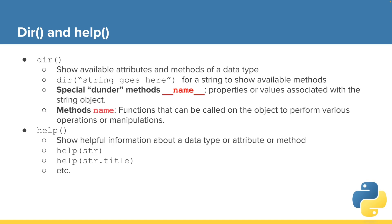One last thing about strings that also applies to other data types and objects as well, is dir and help. These dir and help methods can show us more useful data about the objects we're trying to work with. Dir shows us the available attributes and methods of a data type. We could put a string within the parentheses of dir and it will show the available methods on that string.